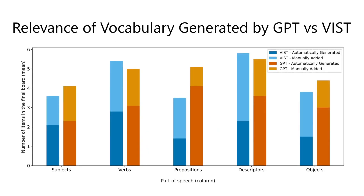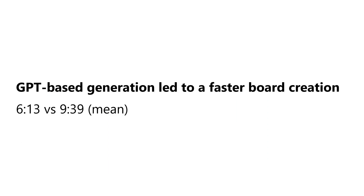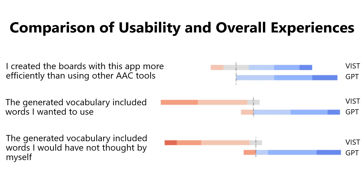To compare the relevance of vocabulary generated by the two methods, we looked at the number of vocabulary symbols each participant kept on a finalized board and the number of symbols manually added. Overall, GPT generated more relevant words for all parts of speech, and participants had to manually add more words in the VIST condition. The largest observed differences were in prepositions, objects, and descriptors. Participants created boards faster under the GPT condition, with an average time close to 6 minutes compared to almost 10 minutes under VIST. Post-questionnaire responses indicated overall satisfaction with QuickPick, but participants preferred the experience offered by the GPT-based generation, expressing that it helped them expand vocabulary more effectively and efficiently.